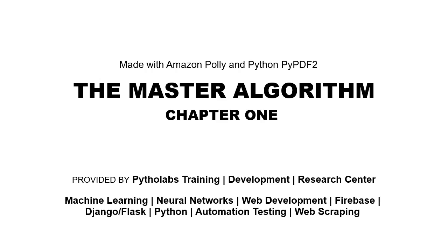If so few learners can do so much, the logical question is: could only one learner do everything? In other words, could a single algorithm learn everything that can be learned from data? This is a very tall order, since it would ultimately include everything in an adult's brain, everything evolution has created, and the sum total of all scientific knowledge. But in fact all the major learners — including nearest neighbor, decision trees, and Bayesian networks, a generalization of naive Bayes — are universal in the following sense: if you give the learner enough of the appropriate data, it can approximate any function arbitrarily closely, which is math speak for learning anything.